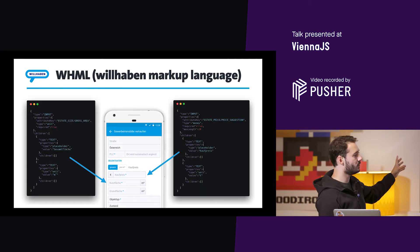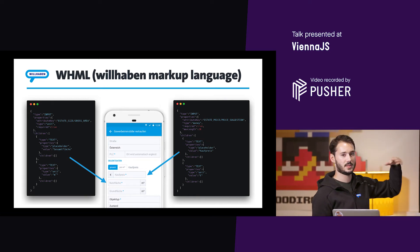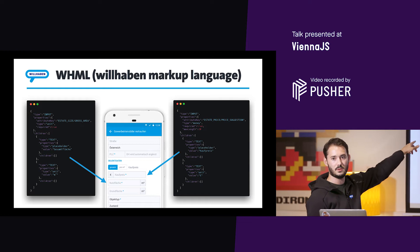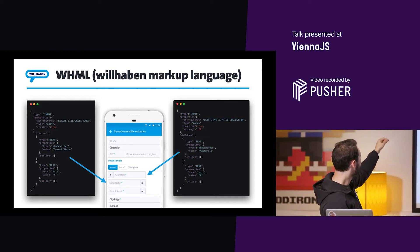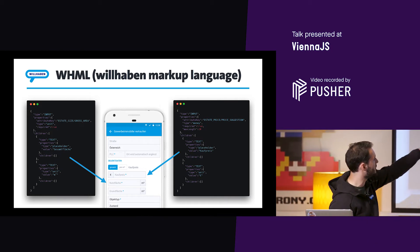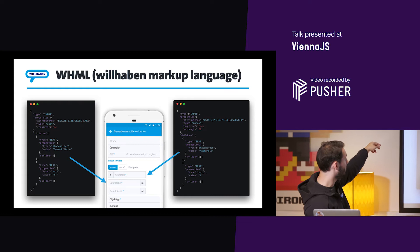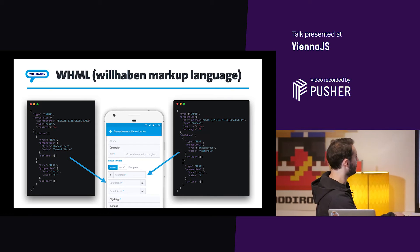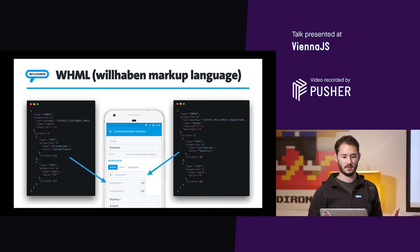Talking about reuse of types: here are two structures with the same type, which is input, but they are different. Again, type unit — they each have their own attribute key, which is the key we send to the API to save the element. But they differ: one is required and has a max length of 20, the other doesn't. Each has two children: one is the placeholder and one is the unit. So you can see the placeholder here and the unit there. Everything comes in the markup, everything.